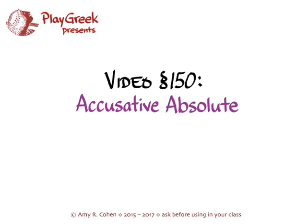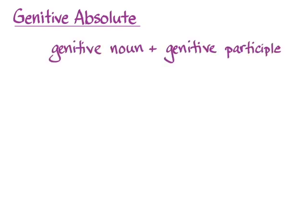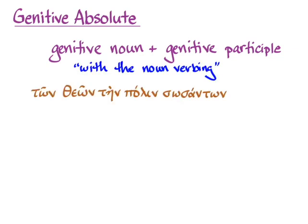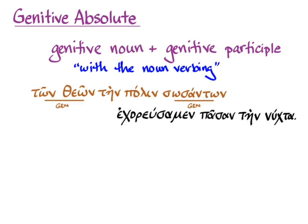In section 150 of Hanson Quinn's Greek Unintensive course, we're going to talk about the accusative absolute, and Hanson and Quinn discuss it on pages 567 to 568. When you learned the genitive absolute, you learned that it's a genitive noun and a genitive participle that mean 'with the noun verbing' when you need a circumstantial participial phrase that's not connected to any of the nouns in the main clause sentence.